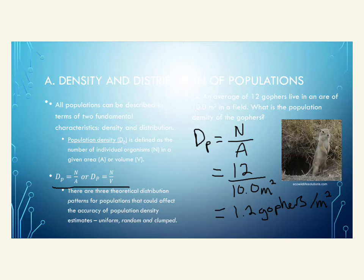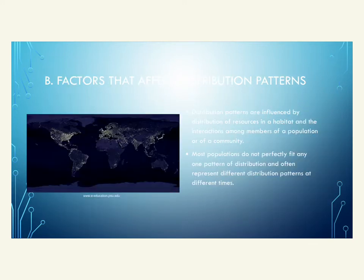When we talk about population distribution, there are three potential patterns: uniform, random, and clumped. Distribution patterns are influenced by several biotic and abiotic factors, including the distribution of resources in a habitat and interactions among members of a population or community.